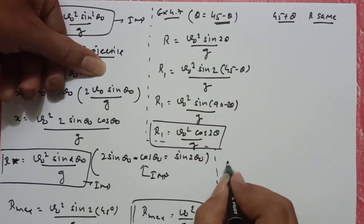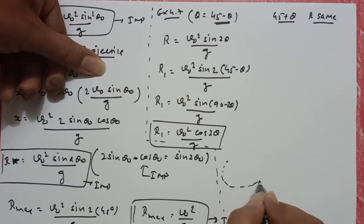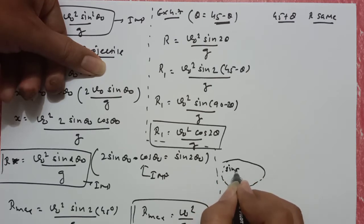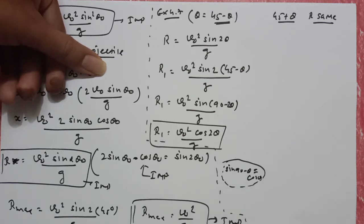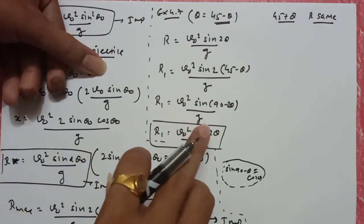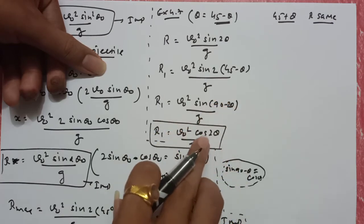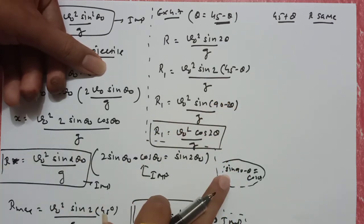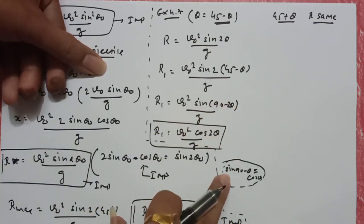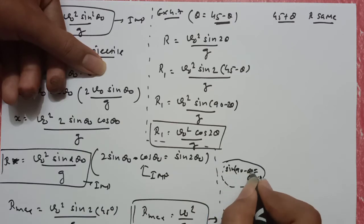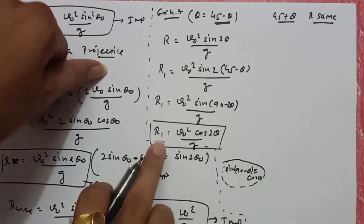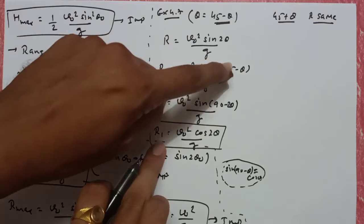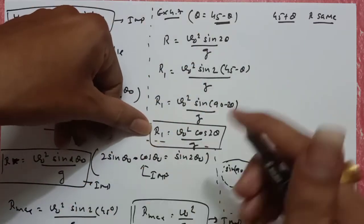यहाँ पर एक formula याद रखना है: sin(90 minus theta) is equal to cos theta. यह formula बहुत important है। तो यहाँ पर sin(90 minus 2 theta) है, तो यहाँ पर cos 2 theta हो गया। मैंने 45 minus theta रखा, तो मुझे यह formula मिला।